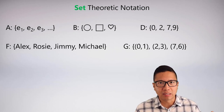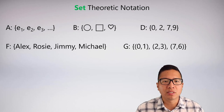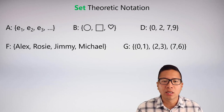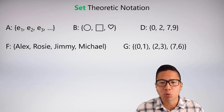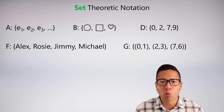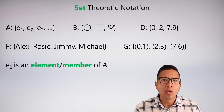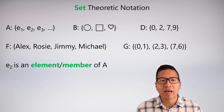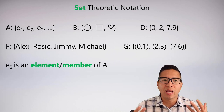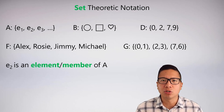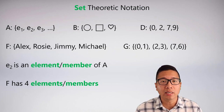Set F contains people: Alex, Rosie, Jimmy, and Michael. It doesn't matter who they are — I've just grouped them into an abstract collection. Set G is a bit different because its members are ordered pairs like (0,1) and (2,3), which could represent a coordinate system. One crucial concept is element or membership: anything in the set is a member of it — e.g., e2 is a member of A.